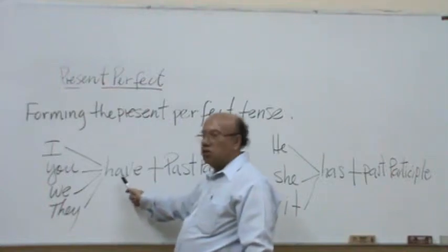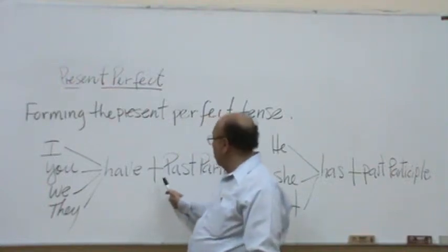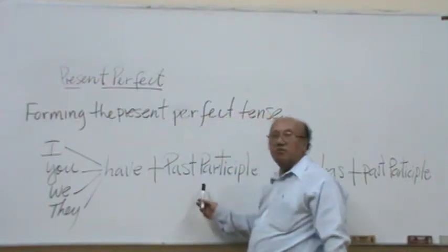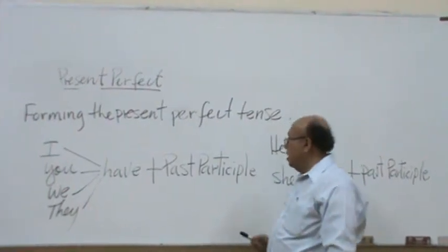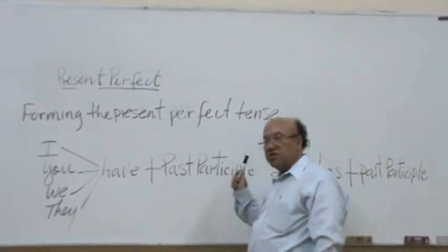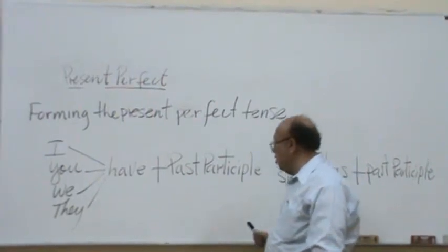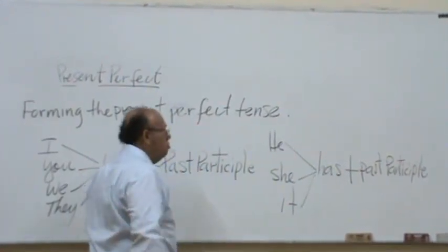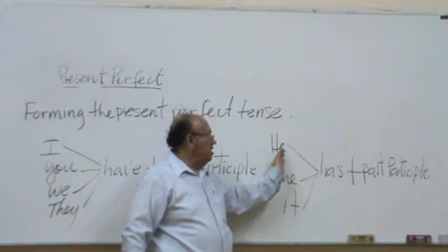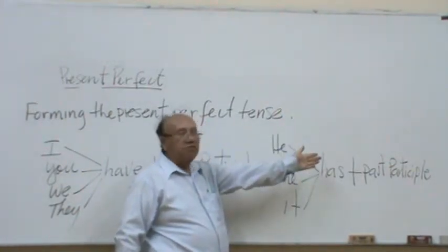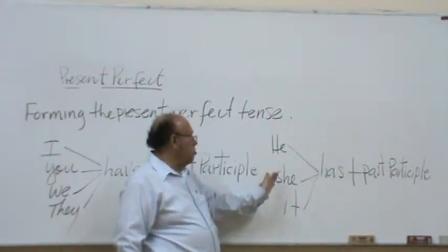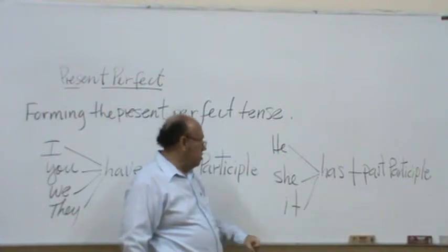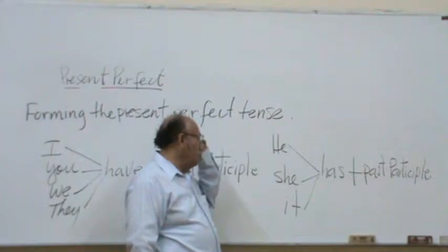with the auxiliary have and then the past participle of the main verb. If the subject is he, she or it, we are going to use has. He has, past participle, she has, past participle, it has, past participle.